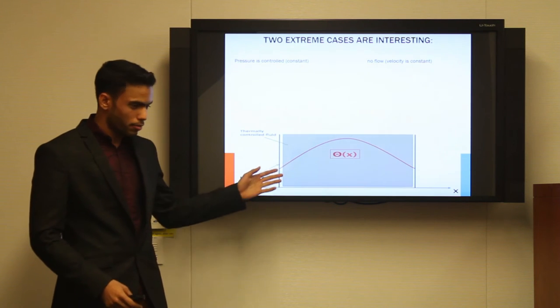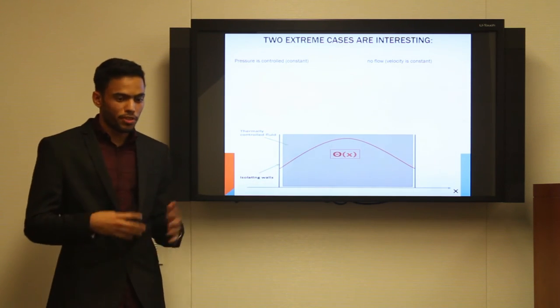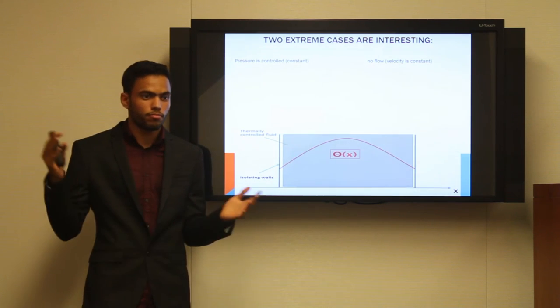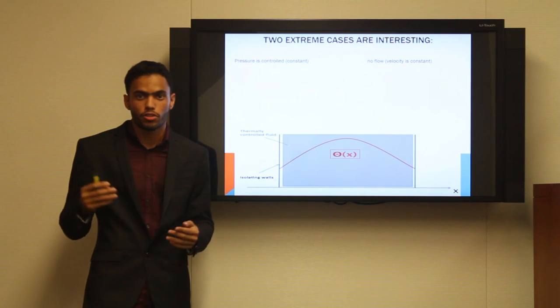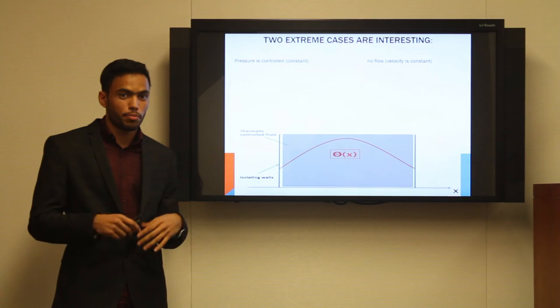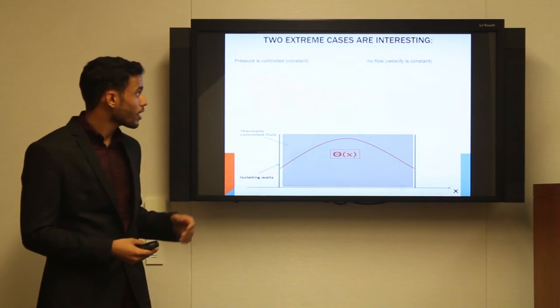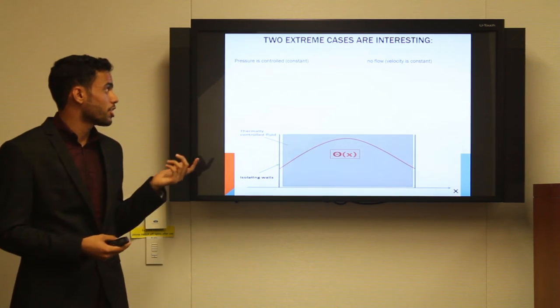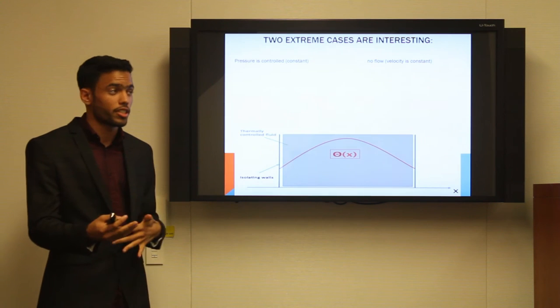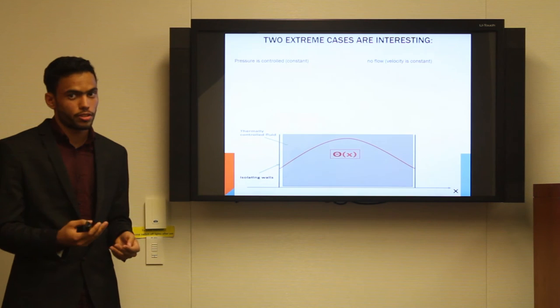In a very simple flow, the properties of the gas like temperature, density, and pressure could have a wide range of values. But two extreme cases would really simplify calculations and would give interesting results. The first extreme would be if the pressure is to be controlled, meaning that it's constant, or if there is no flow, meaning that the acceleration is zero or that the velocity is constant.